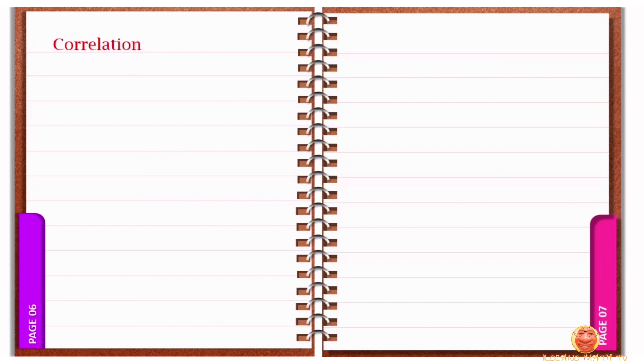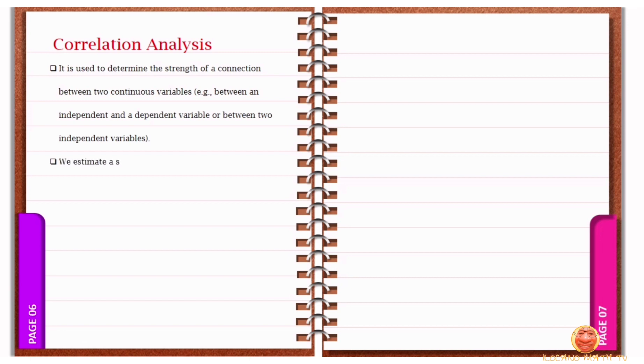When we say correlation analysis, it is used to determine the strength of a connection between two continuous variables, for example, between an independent and a dependent variable, or between two independent variables. We estimate a sample correlation coefficient, specifically the Pearson product moment correlation coefficient, in correlation analysis.